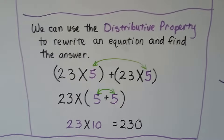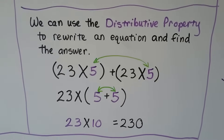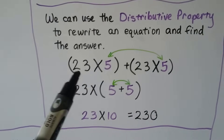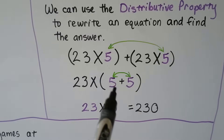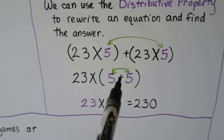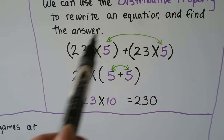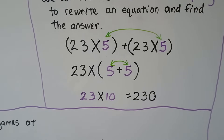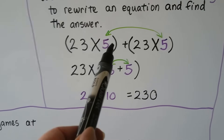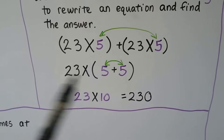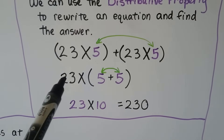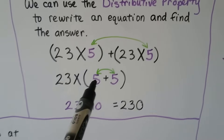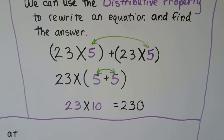We can use the distributive property to rewrite an equation and find the answer — working backwards. If we're given an expression, we can put it into the parentheses form where one number is outside. Since this is addition, there'll be addition between the two numbers inside the parentheses. Since 23 and 23 are the same, we can put 23 outside and write 5 plus 5 inside — because 5 plus 5 equals 10, and 23 times 10 is very quickly 230.